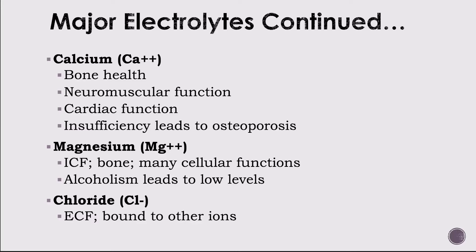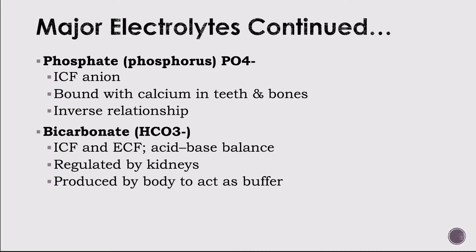Chloride, Cl-, is the most abundant anion in extracellular fluid, usually bound with sodium or potassium. Adults should consume about 2.3 grams of chloride per day. Phosphate, PO4-, is mostly bound with calcium in the teeth and bones as calcium phosphate. It is the most abundant intracellular anion. Phosphate and calcium exist in an inverse relationship — when phosphate is high, calcium is low, and vice versa.